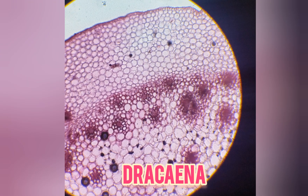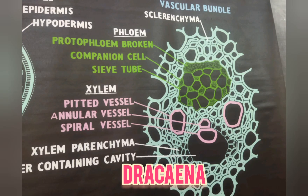It divides chiefly anticlinally to form a row of two or three cells. These cells further undergo periclinal division to form peripheral cells. The centrally situated cells of this group transform into phloem cells and the peripheral cells differentiate into xylem elements. Such vascular bundles, in which phloem cells are surrounded by xylem elements, are known as amphivasal vascular bundles.